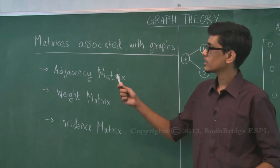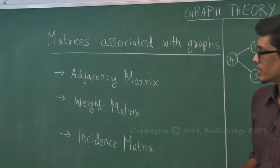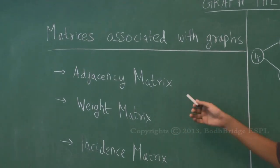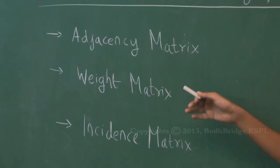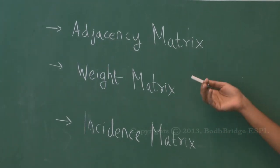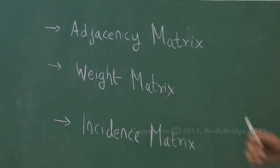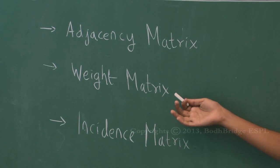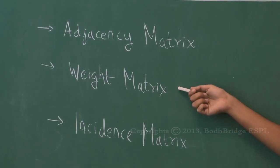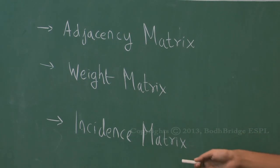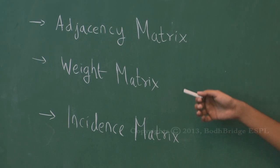We have a lot of matrices associated with graphs. We'll take a look at the important such matrices. The first one is the adjacency matrix, which can represent a graph if it is unweighted. The second one is the weight matrix — it is very similar to the adjacency matrix but used for weighted graphs. The third one is the incidence matrix, which is also a representation of such graphs. We will take a look at the adjacency matrix first.